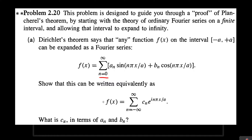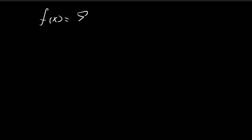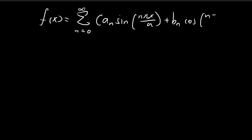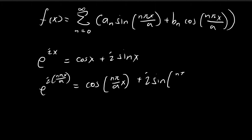We're going to use this expression to arrive at the exponential form. In order to go from the expression that Griffiths gives us — with a_n sin(nπx/a) plus b_n cos(nπx/a) — to the exponential expression, we're going to have to use Euler's formula. Euler's formula is e^(ix) = cos(x) + i·sin(x). So e^(inπx/a) = cos(nπx/a) + i·sin(nπx/a).